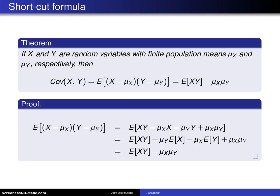Here is a shortcut formula for computing the population covariance. If X and Y are random variables, nothing is indicated here whether they are discrete or continuous, so this is good for both.